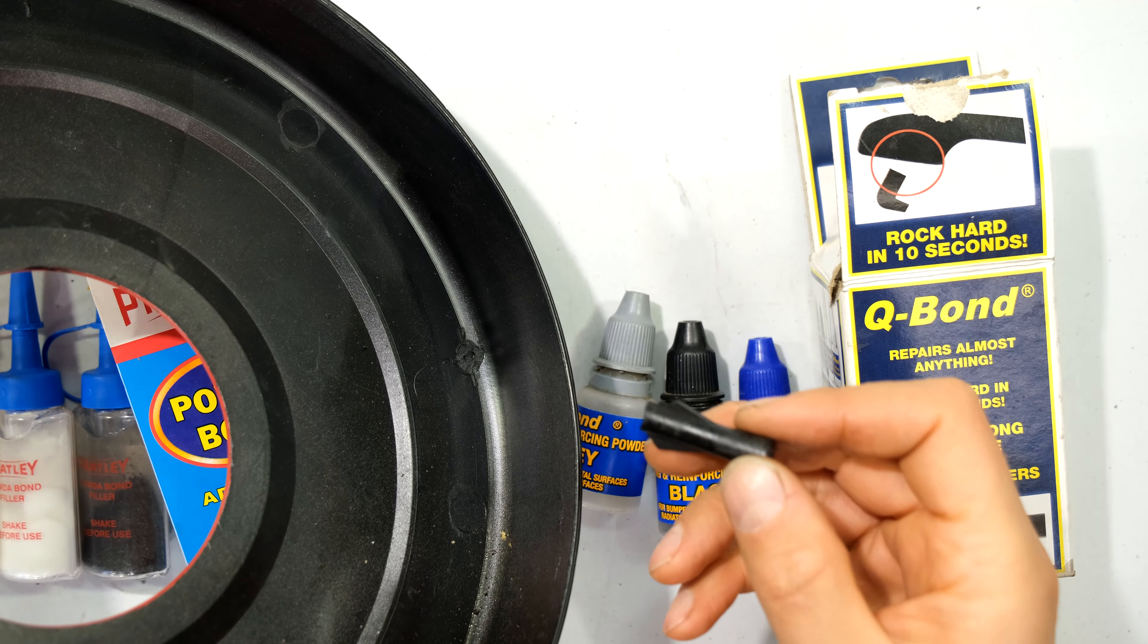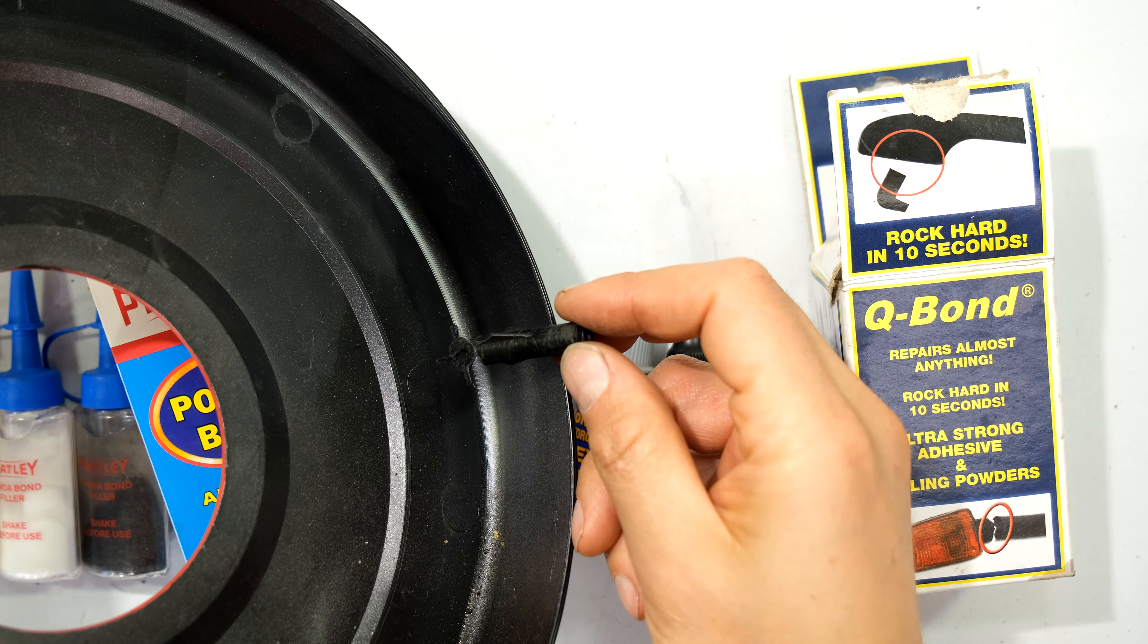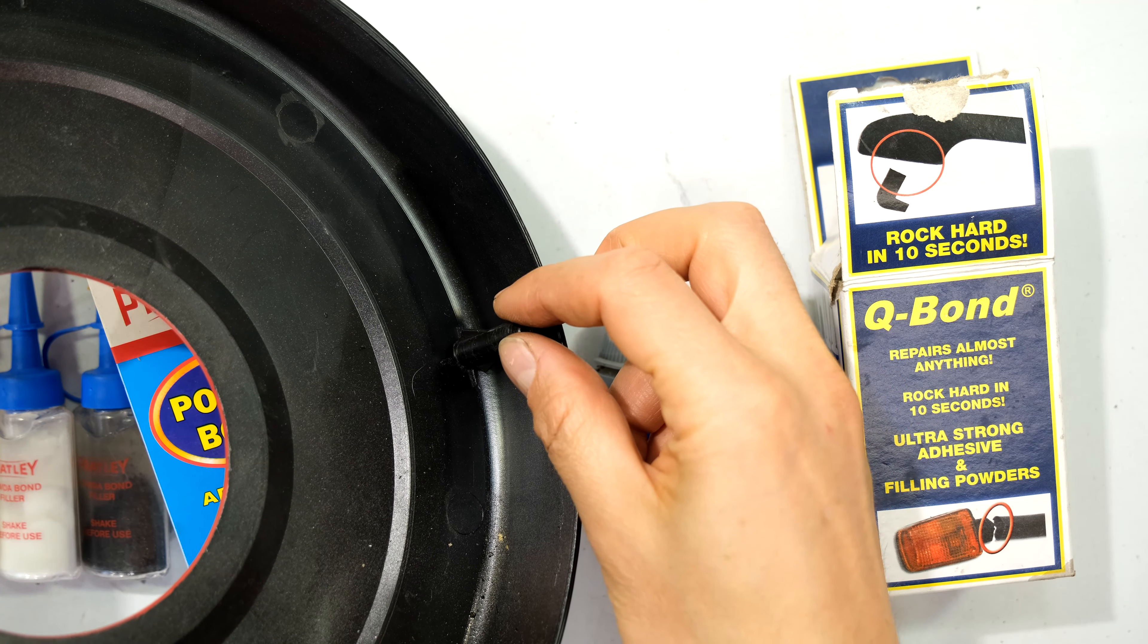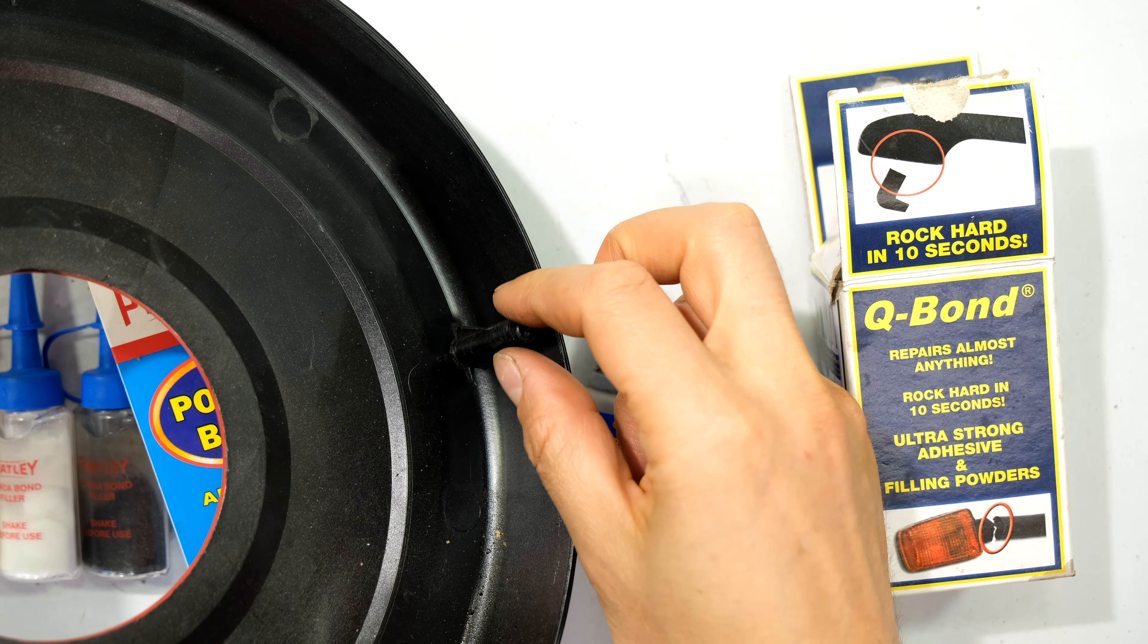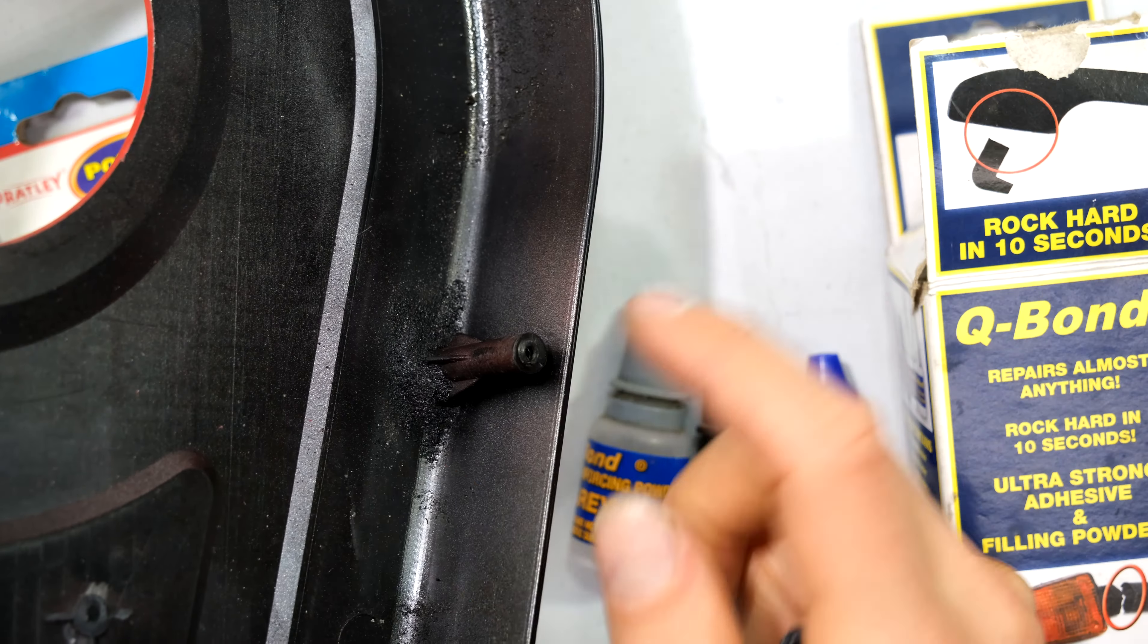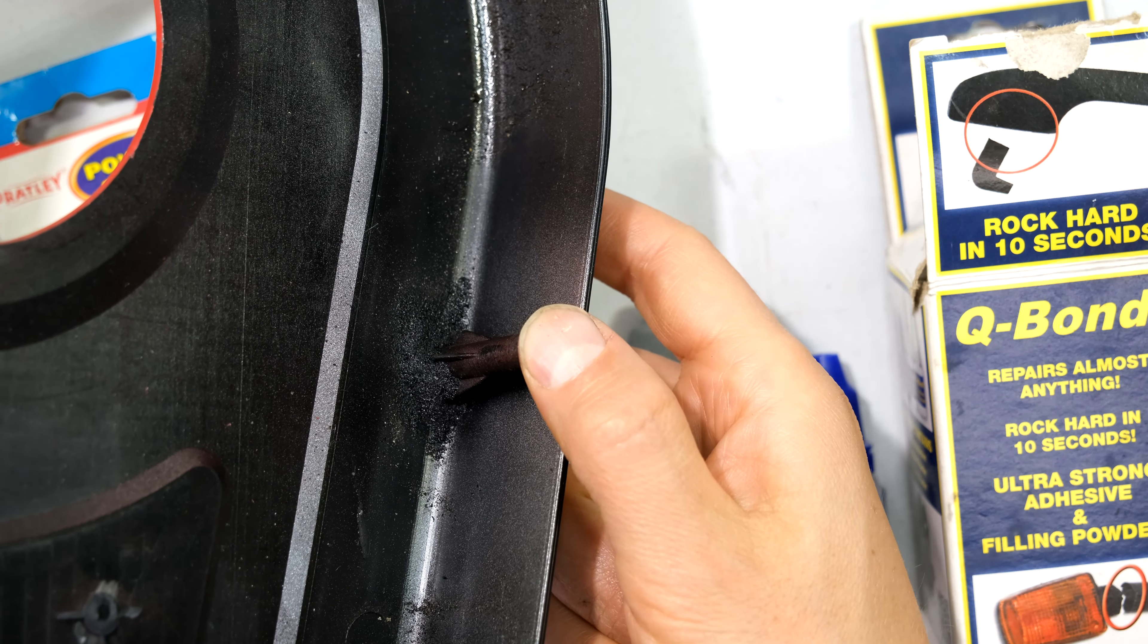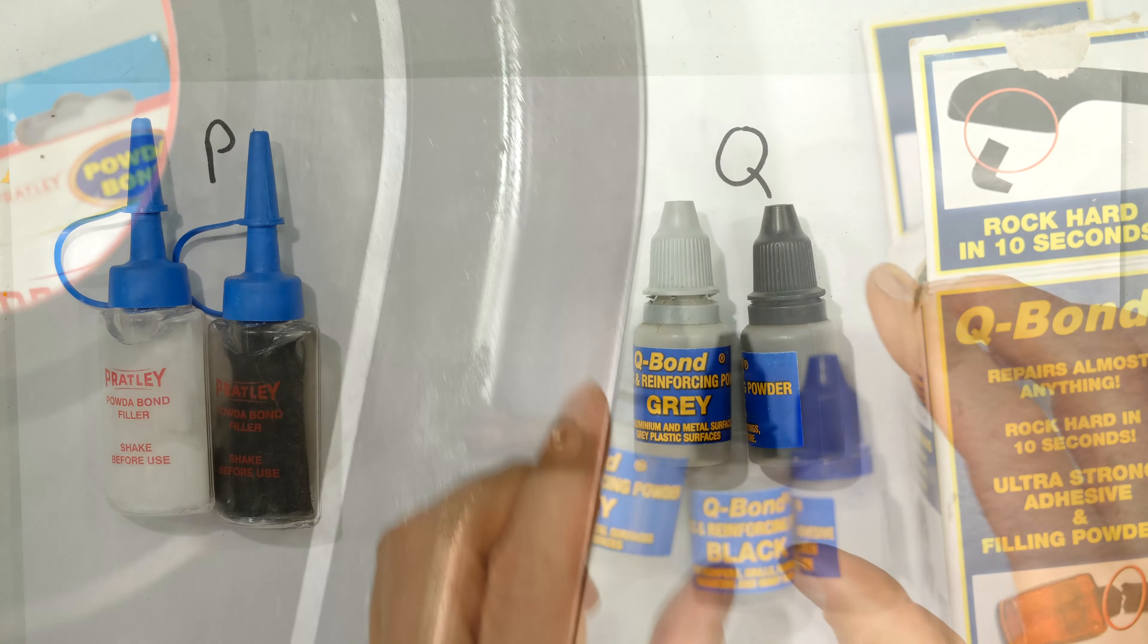Now there are many uses for the Q Bond and Powder Bond and I'm just showing you an example of where one could use them. Here is a post, it was stuck over here and over time somebody knocked it off and it broke. So one could use the Powder Bond or the Q Bond like I've done over there. So this post now is in place. In this video I'm going to tell you which of these two products I prefer to use.